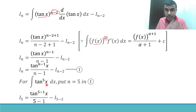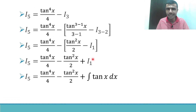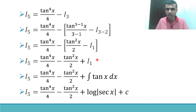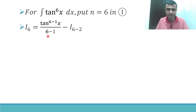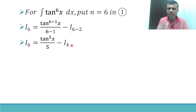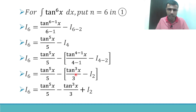I'm going a bit slow because this topic is generally assumed to be tough, so I want everyone to have enough time to understand. For I_6: putting n = 6 gives tan^5 x / 5 − I_4. For I_4, put n = 4 in the same formula: I_4 = tan³x / 3 − I_2.